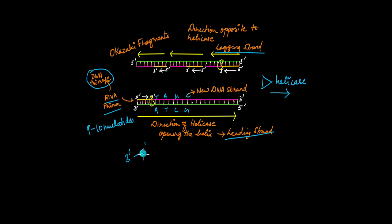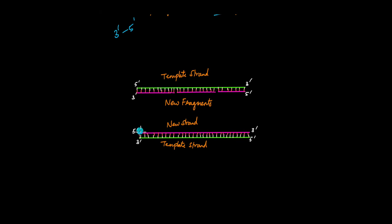So the leading strand is the 3' to 5' template strand, and the lagging strand is the 5' to 3' template strand. DNA polymerase has synthesized both strands, but two problems remain: there are still bits of RNA from the RNA primers, and the lagging strand is still broken up into Okazaki fragments. The RNA is first replaced with DNA by DNA polymerase, and then the enzyme known as DNA ligase comes and stitches the fragments together.